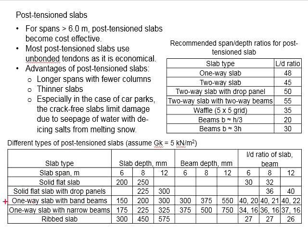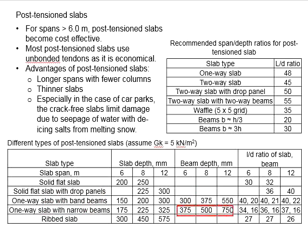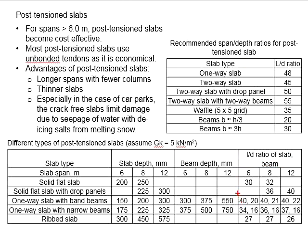Now looking at another example — the one-way slab with narrow beam. These are the recommended slab depths for spans of 6, 8, and 12 meters. For the beam, the recommended depths are 350 mm, 500 mm, and 750 mm for 6, 8, and 12-meter spans respectively. In terms of the recommended L/d ratio, the first number represents the ratio for the slab and the second for the beam. The recommended ratio for the slab is typically larger than the ratio for the beam.